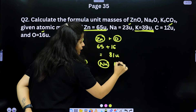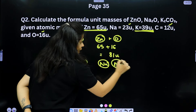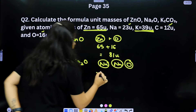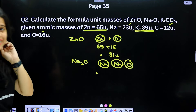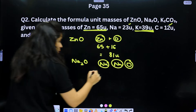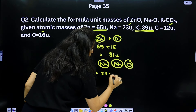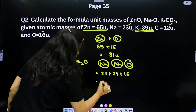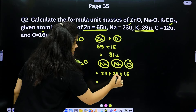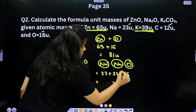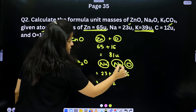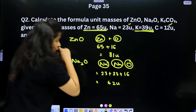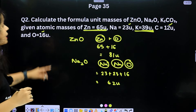Na₂O: two sodium atoms (23 + 23 = 46) + oxygen (16) = 62u.